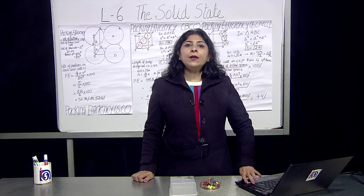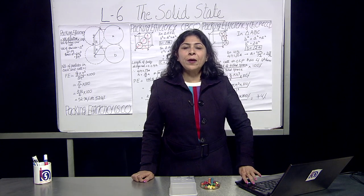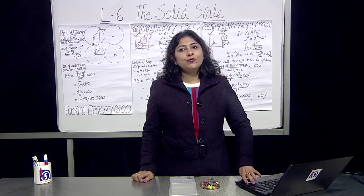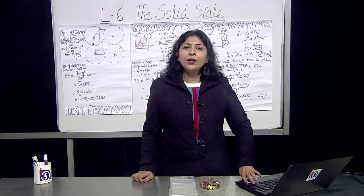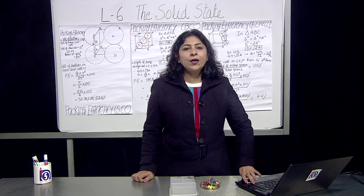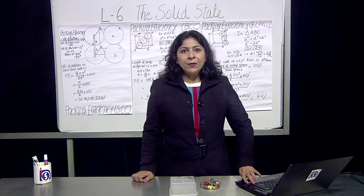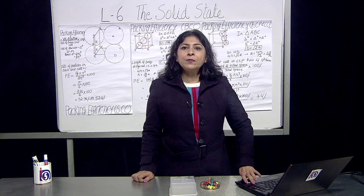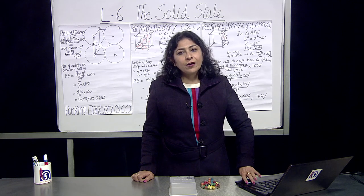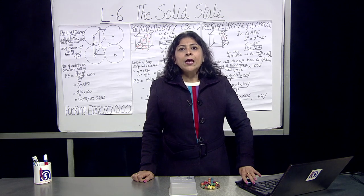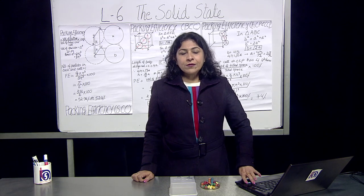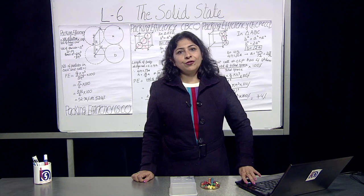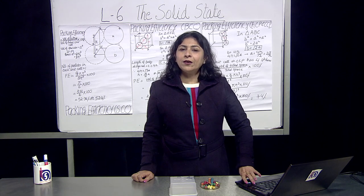For example, if the number of closed packed particles is equal to N, then the number of particles in octahedral voids will be N and the number in tetrahedral voids will be 2N — tetrahedral is double. During this program we have discussed the closed packed structure of the solids. Thank you.